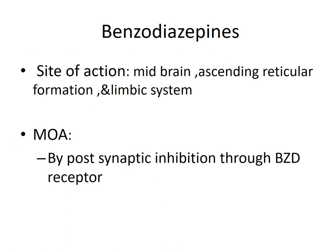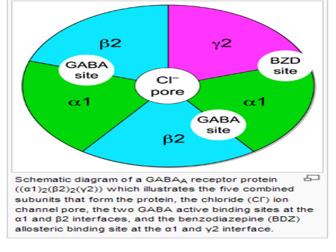The most important group of drugs in the management of anxiety is benzodiazepines. They act by inhibiting the postsynaptic membrane through the benzodiazepine receptor. The most important sites in which they act includes the midbrain, limbic system, or ascending reticular formation. The inhibition is brought about by its agonistic action on the GABA-A receptor. As you know, GABA is the inhibitory neurotransmitter in the brain, so benzodiazepines produce their inhibitory action on the postsynaptic membrane by having an agonistic action on the GABA-A receptor.